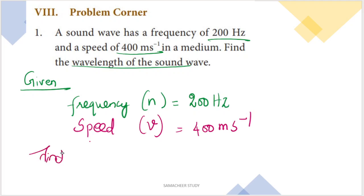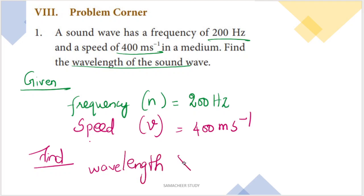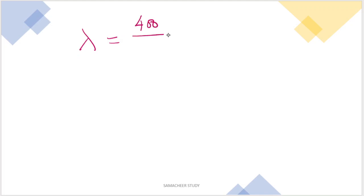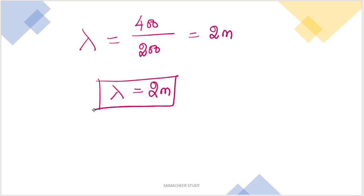When we choose the question, we have to choose the formula. The formula is v = n × lambda. So lambda is equal to v divided by n. Substituting: lambda = 400 divided by 200, which gives lambda = 2 meters.